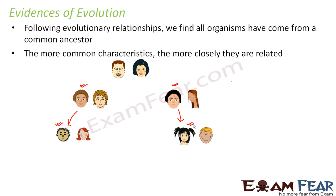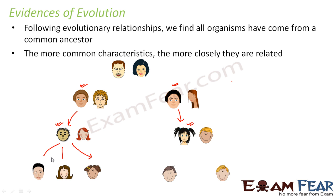Now let us say they also get married. This couple gives birth to three children — one guy and two girls — and this couple gives birth to two sons. Now if you see these two kids from the same parents, they are very similar to each other because they contain the genes of the same parents. But when you compare this guy and that guy from different families, they are not at all similar — they are completely different. So as the relationships become far, the similarities keep on decreasing.